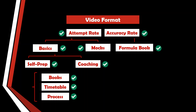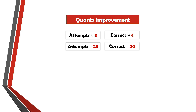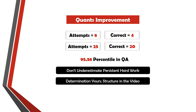We are almost at the end of the video, but before closing let me show you my quants improvement. My initial mock scores were very poor. At the end, my average was around 25 attempts with 20 questions correct. In the final exam, I attempted 28 questions but made a lot of silly mistakes. Fortunately, I was able to score more than 95 percentile, and I still believe that was probably because of the higher attempt rate. I would highly encourage you to work on your attempt strategy first. For someone who is not good at QA, never underestimate the power of persistent hard work. The only thing I did was work hard for a section I wasn't comfortable in. If you have determination, what I've shared in this video can give you a structure to improve your score. It's possible and you can do it, no matter which background you come from.